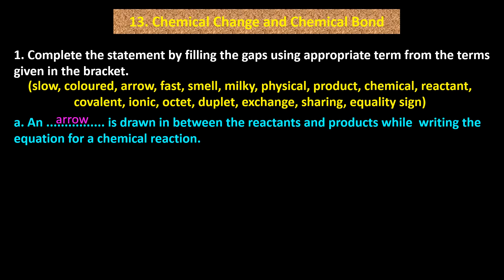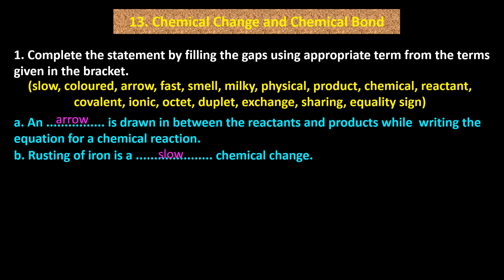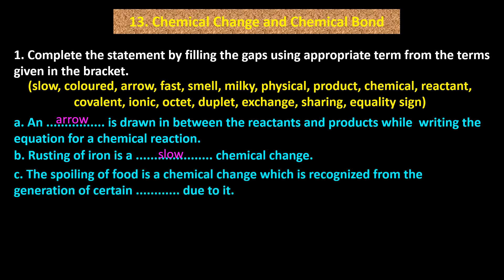Answer A: Arrow. Statement B: Rusting of iron is a blank chemical change. Answer B: Slow. Statement C: The spoiling of food is a chemical change which is recognized from the generation of certain blank due to it. Answer C: Smell.